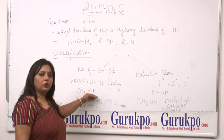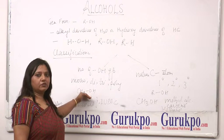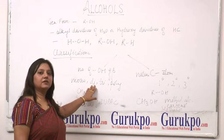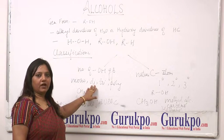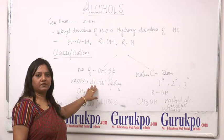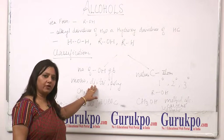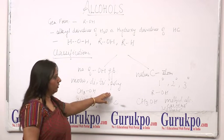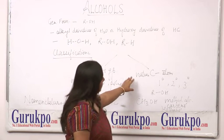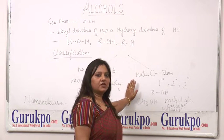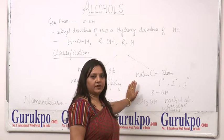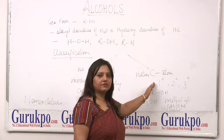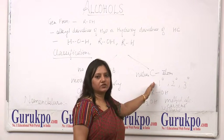If there are two OH groups attached to a methyl or ethyl group, then it will be called dihydric. And if more than three hydroxyl groups are present, then it will be called a polyhydric alcohol. The second classification is based upon the nature of the carbon atoms to which the OH group is attached. On this basis, we call them primary, secondary, or tertiary alcohols.